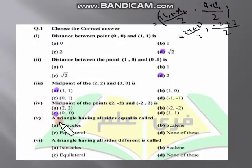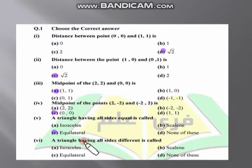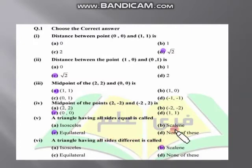اگلا MCQ: a triangle having all sides equal is called — جس triangle کی ساری sides equal ہوتی ہیں اسے equilateral triangle کہتے ہیں۔ تینوں sides کی length یکساں ہوتی ہے — right answer: equilateral triangle۔ A triangle having all sides different — اگر تینوں sides کی length ایک دوسرے سے الگ ہے تو اسے scalene triangle کہتے ہیں۔